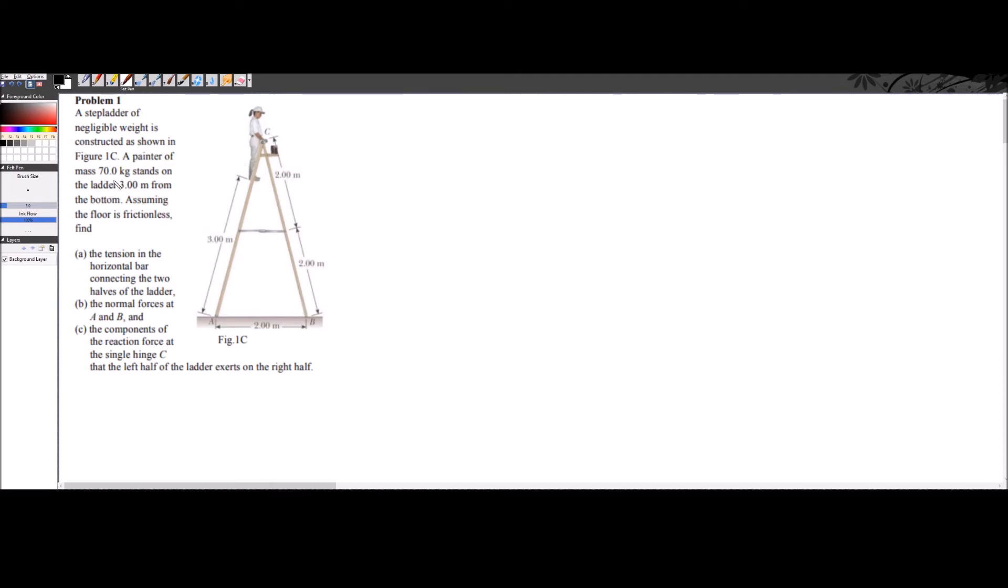A painter of mass 70 kilograms stands on the ladder 3 meters from the bottom. Assuming the floor is frictionless, we want to find the tension in the horizontal bar connecting the two halves of the ladder, the normal force at A and B, and the components of the reaction force at a single hinge C, the left half of the ladder exerts on the right half.